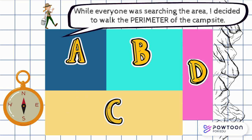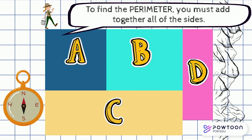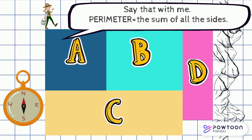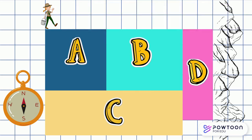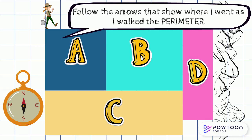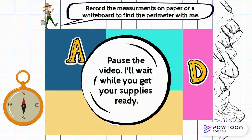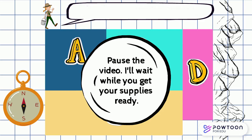While everyone was searching the area, I decided to walk the perimeter of the campsite. Did you hear that? I said perimeter. To find the perimeter, you must add together all of the sides. Say it with me: perimeter equals the sum of all the sides. Remember, each side of each square represents one kilometer. Follow the arrows that show where I went as I walked the perimeter. Record the measurements on a paper or whiteboard to find the perimeter with me. Pause the video — I'll wait while you get your supplies ready.